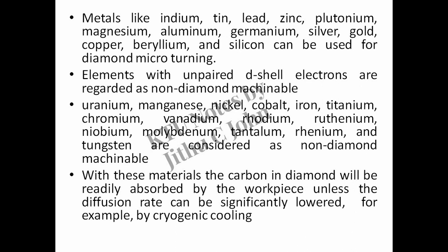Elements with unpaired D-shell electrons are regarded as non-diamond machinable. These include uranium, manganese, nickel, cobalt, iron, titanium, chromium, vanadium, rhodium, ruthenium, niobium, molybdenum, tantalum, rhenium, and tungsten. With these materials the carbon in diamond will be readily absorbed by the workpiece unless the diffusion rate can be significantly lowered, for example by cryogenic cooling.